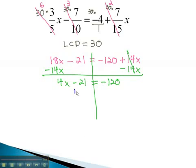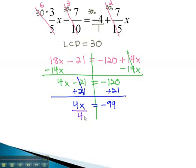Now add 21 to both sides, and 4x equals negative 99. Dividing both sides by 4 will leave our x alone. x is equal to the fraction negative 99 fourths.